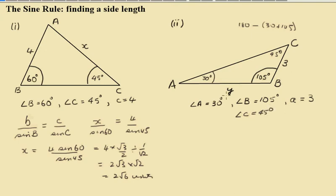Little c is the y. So we can set that up. We can set c over Sine of C is equal to a over Sine of A. Little c is y. So y over Sine of 45 is equal to 3 over Sine of 30.